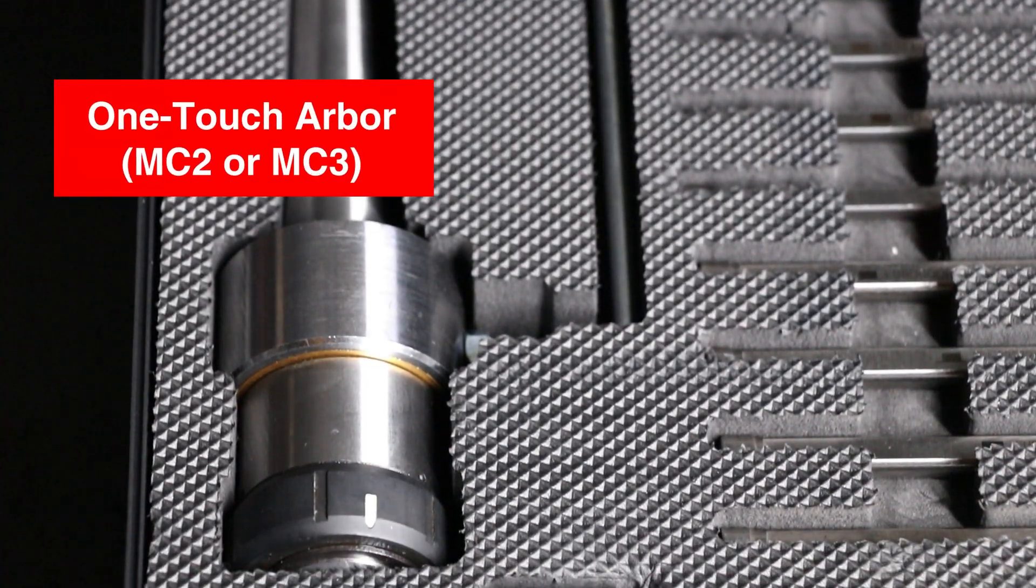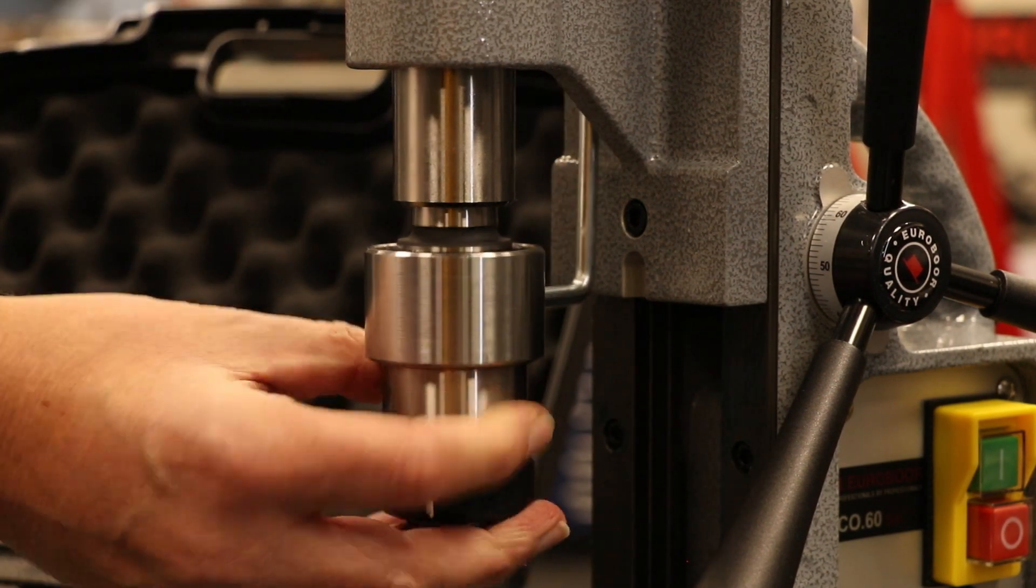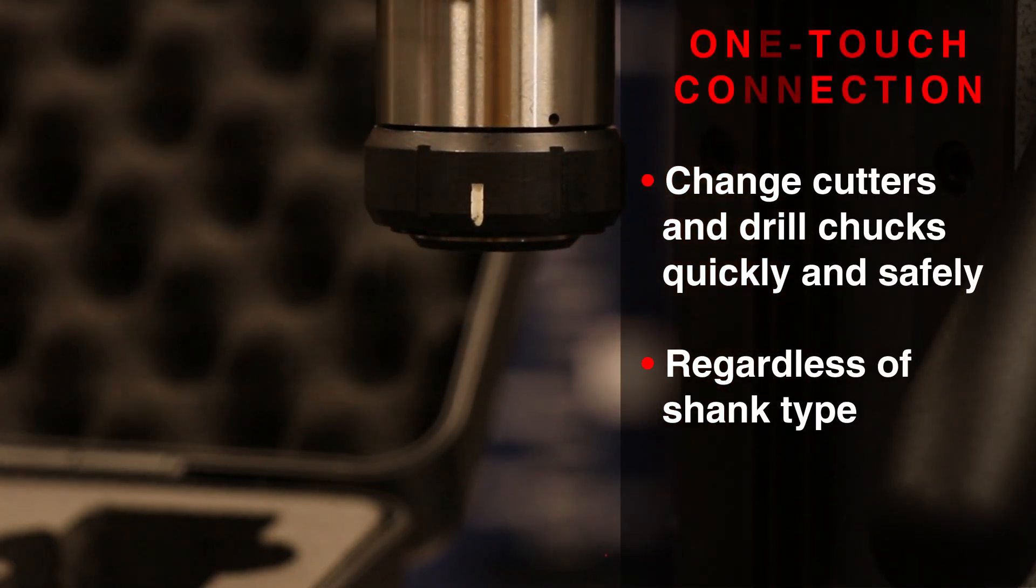It all comes together with the Arbor. Because it's equipped with a one-touch connection, you can change cutters and drill chucks quickly and safely.